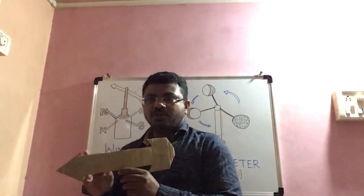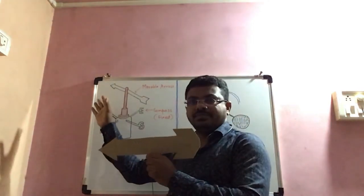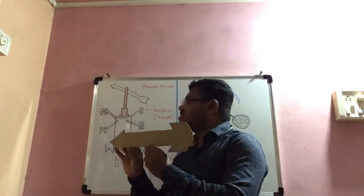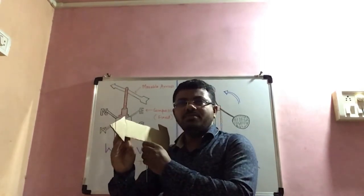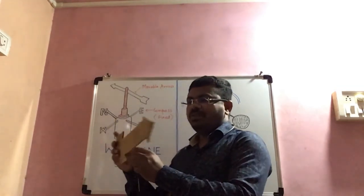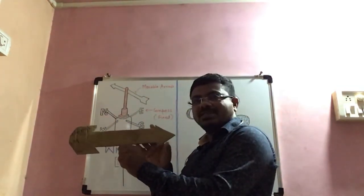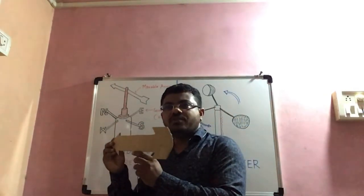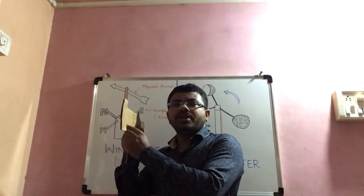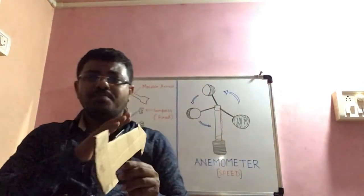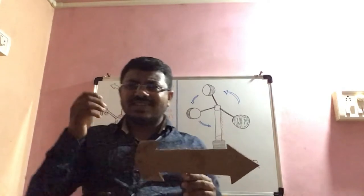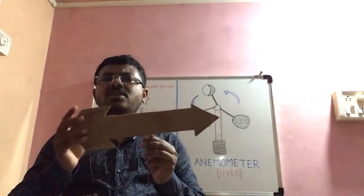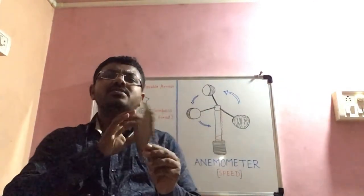For example, if the wind is blowing from north, then the arrow will be pointed towards the north. If the wind is blowing from the west, the arrow will be pointed towards the west. If from the south, towards the south; if from the east, towards the east. Even a slight movement in the wind will change the direction pointed by this arrow.